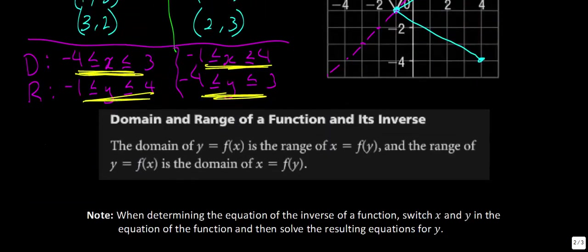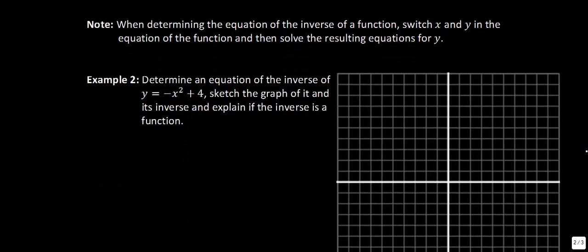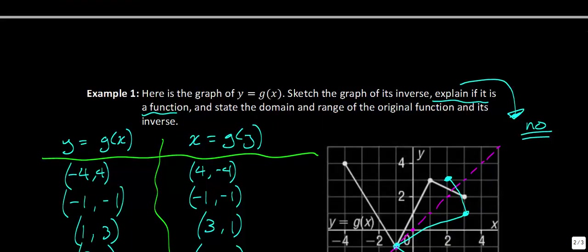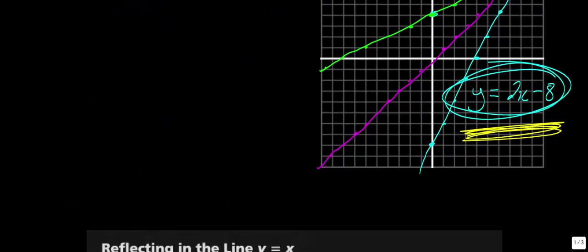That's the key note: the domain of the original function is the range of its inverse, and vice versa. When determining the equation of the inverse of a function, we just switch x and y in the equation of the function, then solve for y. All you do is switch the values of x and y and then solve for y again.